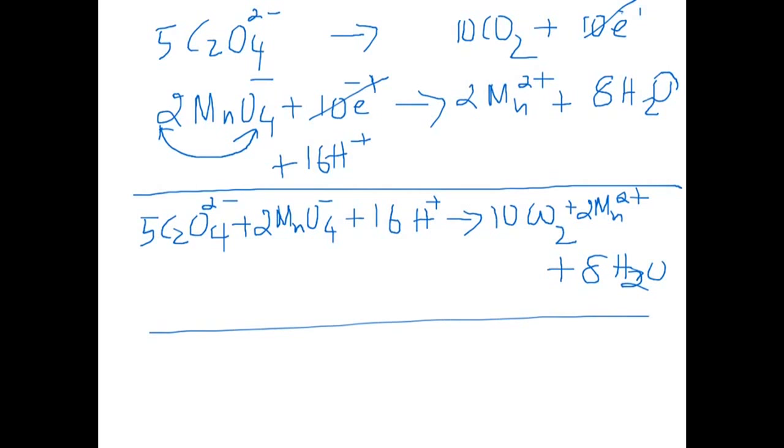You have a completely balanced redox equation here and we have used the ion electron method. The equation is balanced in an acidic medium. If you count the charges on the left and the right, they will be the same. So this is how you balance a redox reaction using ion electron method.